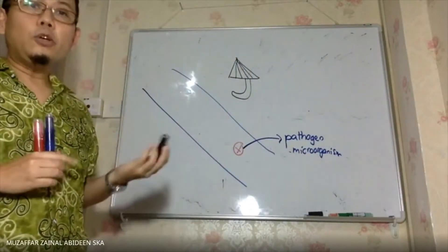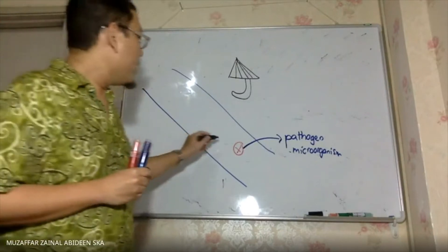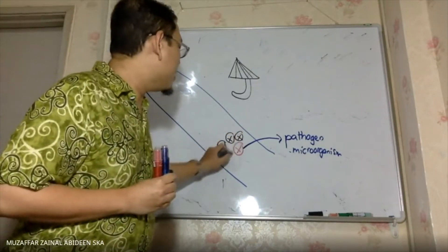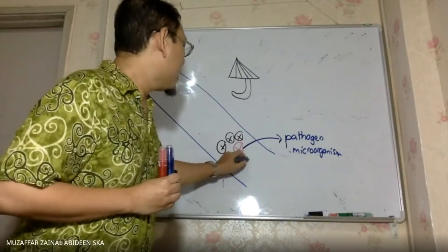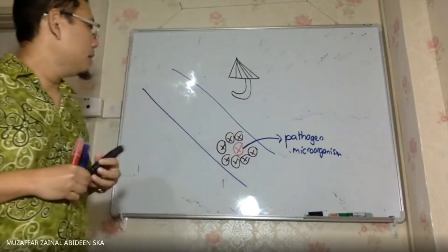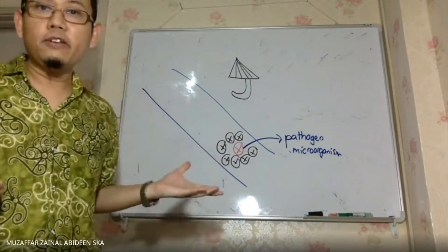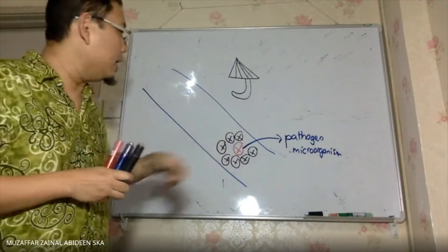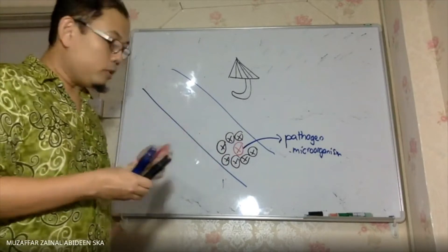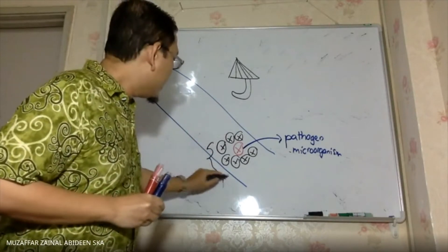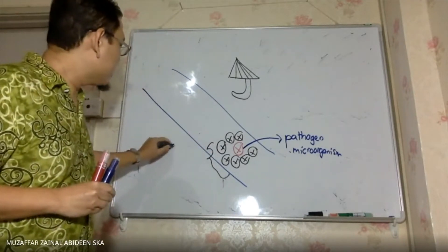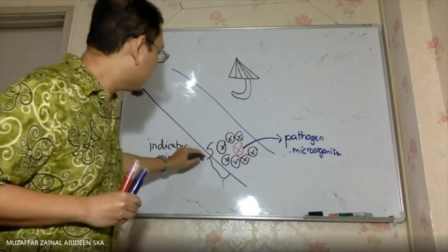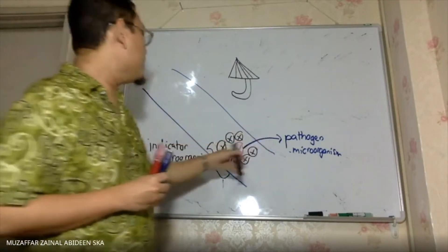One good thing about pathogen microorganisms is that whenever they are present in the water, there will be another kind of microorganism also present. But if the pathogen microorganism is not in the river or the water, then the other microorganism — which I draw in black color — will not be present. Those black-colored ones are the indicator microorganisms.